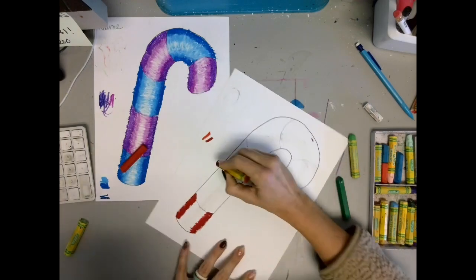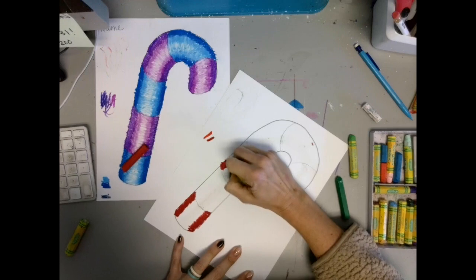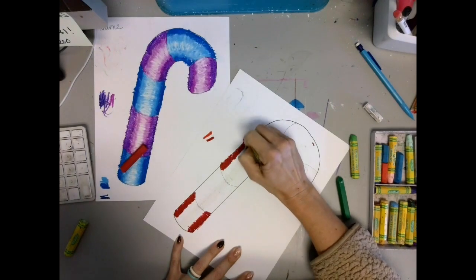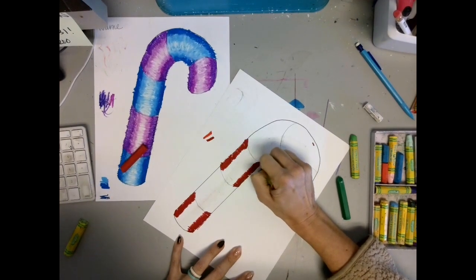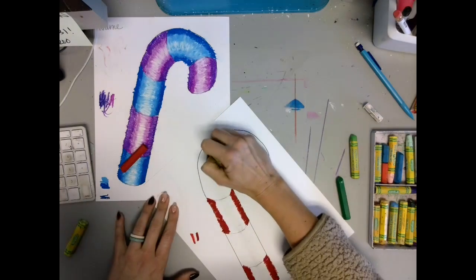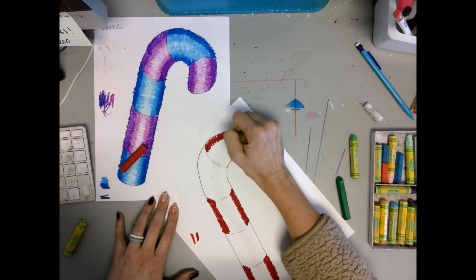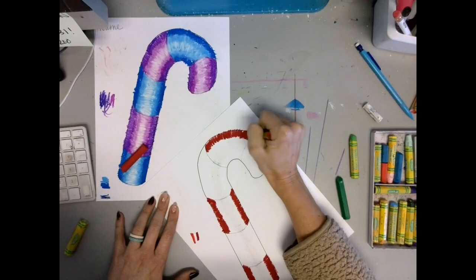Go back and forth until you have a nice solid line of these kind of jagged zigzag motions, but you don't want a lot of the white showing through from the paper.